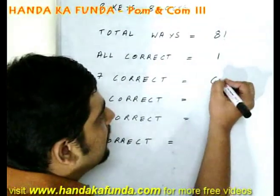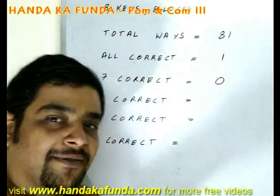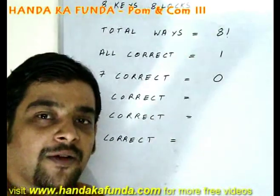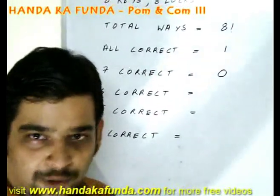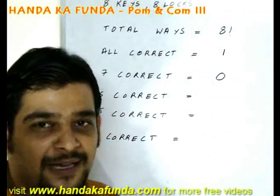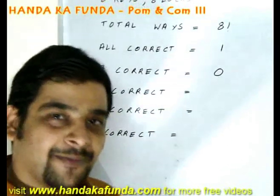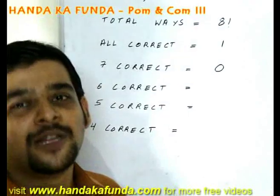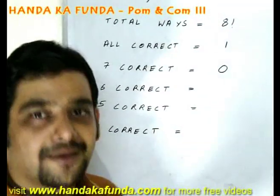In how many ways will 7 of them be correct? That is possible in 0 ways. Think about it. If 7 of them are correct, then what about the wrong one? Suppose K1, K2, K3, K4, K5, K6 and K7 are correct. But K8 is wrong. But there is only 1 lock position left. So this is not possible.